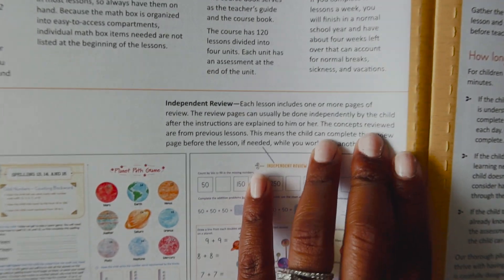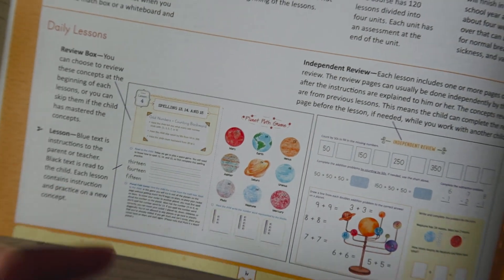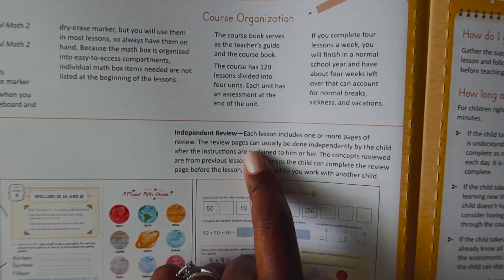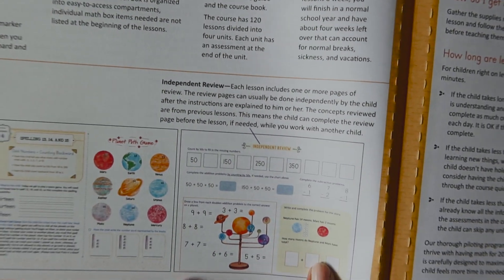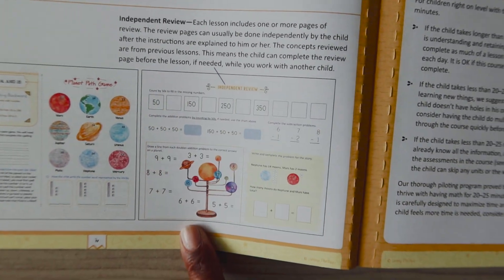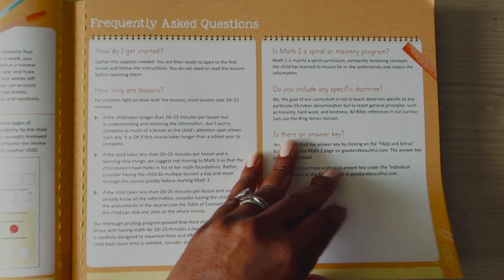So in the blue is your instructions and the black is what you are saying to your child. And then it has like once you teach them the lesson that's what you're saying to them you're teaching the lesson. Then you have independent review. So then the kid will get to go and do their independent review. Let me get a bigger page here. And this is open and go.